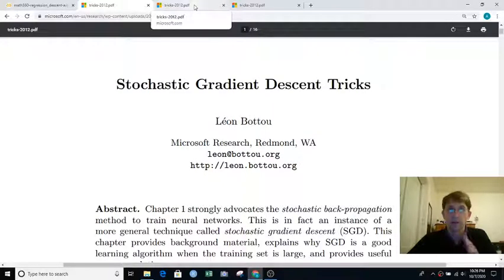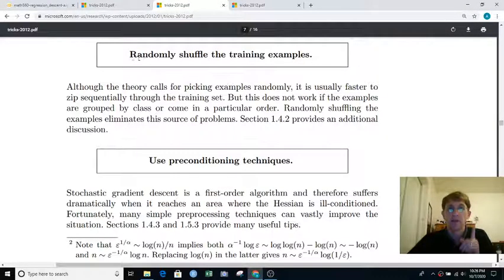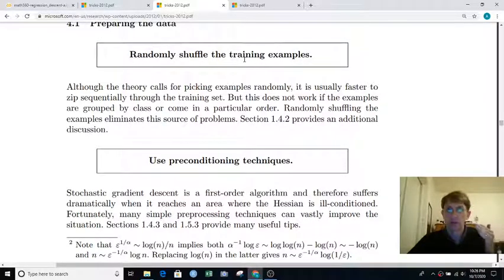Some interesting advice comes from this paper. You should randomly shuffle the training examples, not have them in order of increasing x values or increasing y values, and we'll talk about that later. Use preconditioning techniques. That means try to unsquish those oval or elliptical contours, maybe by standardizing the data first, making its mean 0 and standard deviation 1.